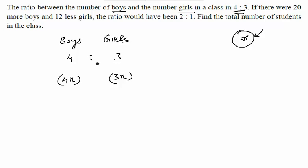Initially, 4 is to 3 was just the ratio. This is the actual number. Now let us go to the second statement. If there were 20 more boys - there are already 4x boys - there are 20 more boys and 12 less girls. There are currently 3x girls, we are taking 12 less girls. The ratio would have been 2 is to 1, which means that the ratio of these two quantities, 4x plus 20 upon 3x minus 12, would have been 2 is to 1.